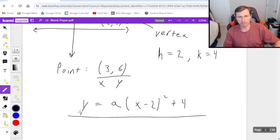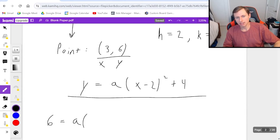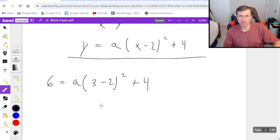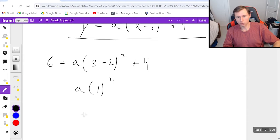So watch how I do that. It's going to be 6 equals a times 3 minus 2 squared plus 4. So if I want to solve this, there's a couple things I can do. The first thing I'll do is I'll combine the 3 minus 2 to just make that 1. And we know 1 squared is just 1.